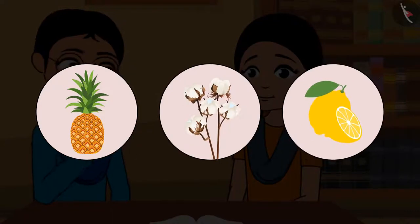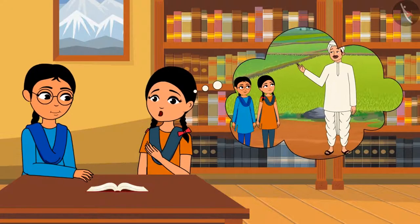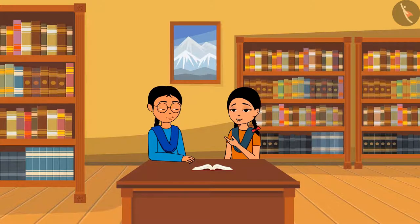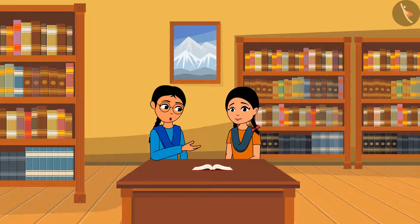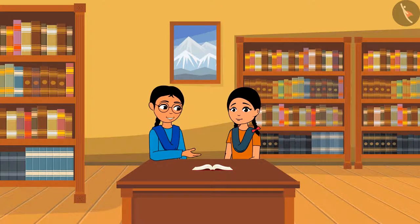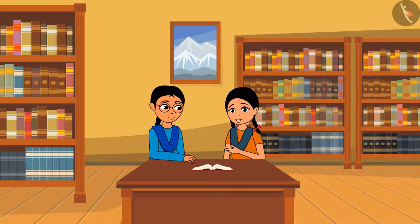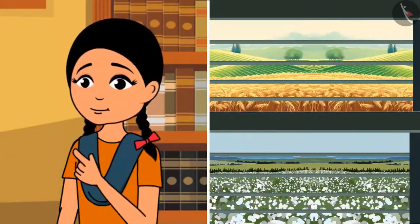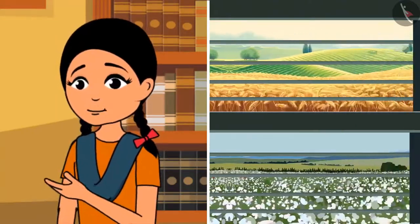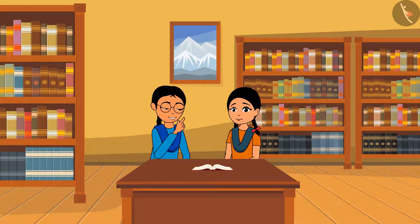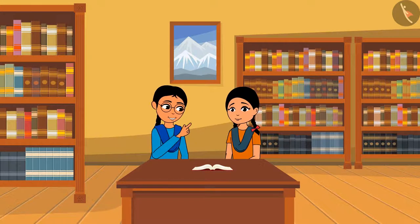The crops that grow in black volcanic ash soil include pineapple, cotton, and lemon. They connect what they learned — minerals make soil red, and volcanic ash makes it black — concluding that different types of soil are suitable for different crops. Nilu recalls seeing different crops like wheat and cotton at different places during the train journey. They decide to go home and make a list of which soil is suitable for which crop, to show their teacher the next day.